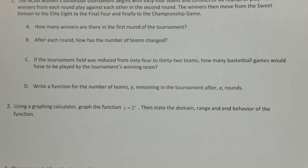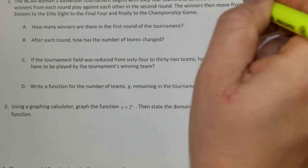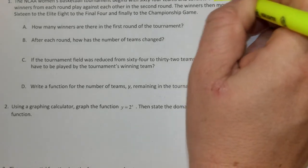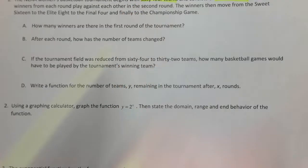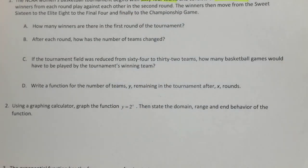Exponential Functions. The NCAA Women's Basketball Tournament begins with 64 teams and consists of 6 rounds. The winners from each round play against each other in the second round. The winners then move from the Sweet 16 to the Elite 8, and to the Final Four, and finally to the Championship game.